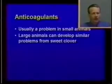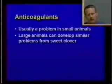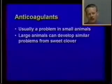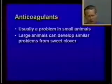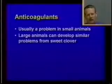Anticoagulants are usually a problem in small animals; dogs are most commonly poisoned due to their feeding habits. With cats and also with raptors, you can see relay toxicosis — when a rat eats the poison and is then eaten by a cat or hawk, the predator may develop anticoagulant toxicity from ingesting the rat. Large animals may exhibit similar problems from ingesting large amounts of moldy sweet clover, which contains dicoumarol, producing the same effects as anticoagulant rodenticides.